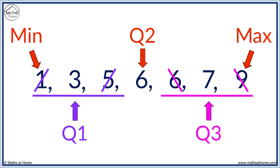We now have the five number summary. The minimum is one. Q1 is three. Q2 is six. Q3 is seven. And the maximum is nine.